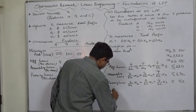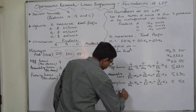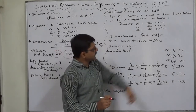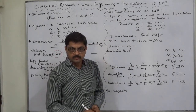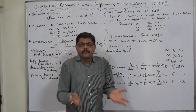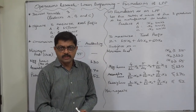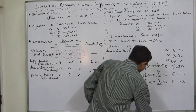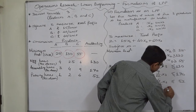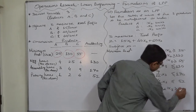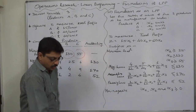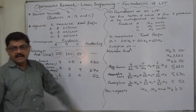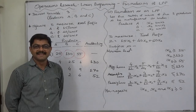The last condition is non-negativity. The values of X1, X2 and X3 can never be negative — either produce nothing (zero level of production) or produce a positive number of units. So X1, X2 and X3 are all non-negative. This completes the formulation of the problem as a linear programming model. Thank you.